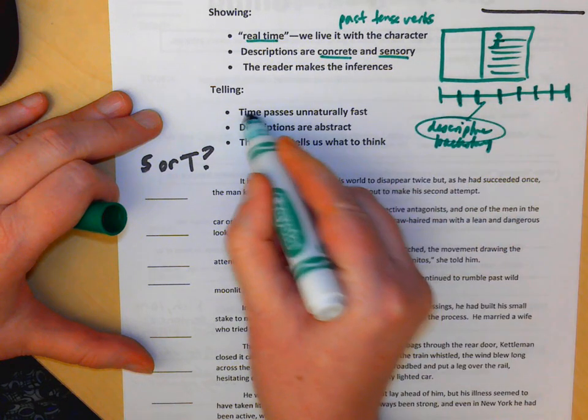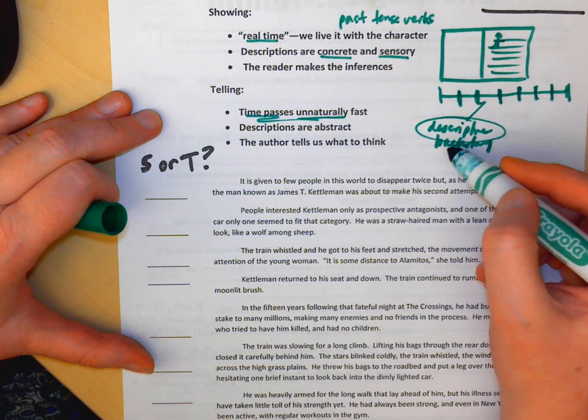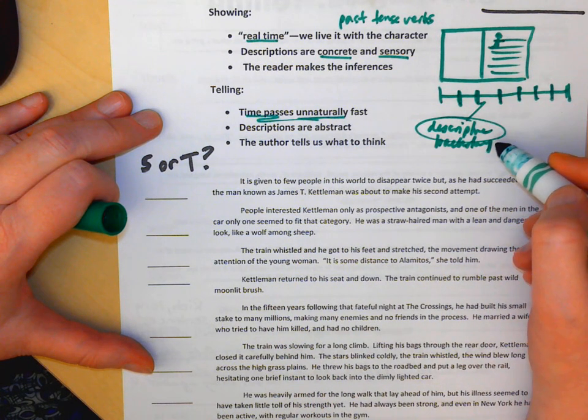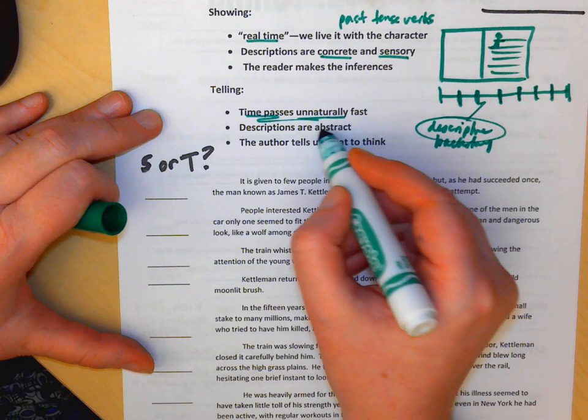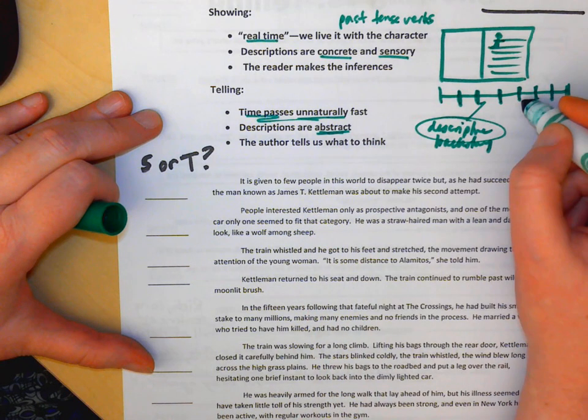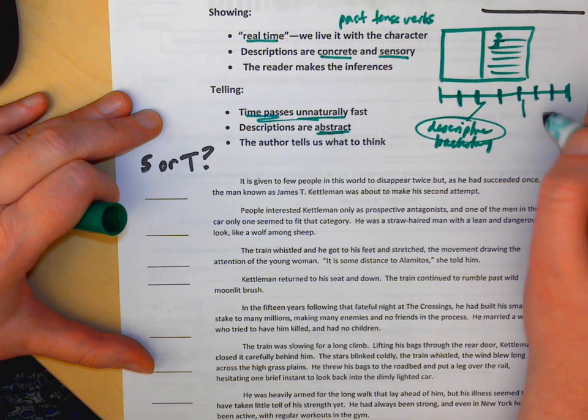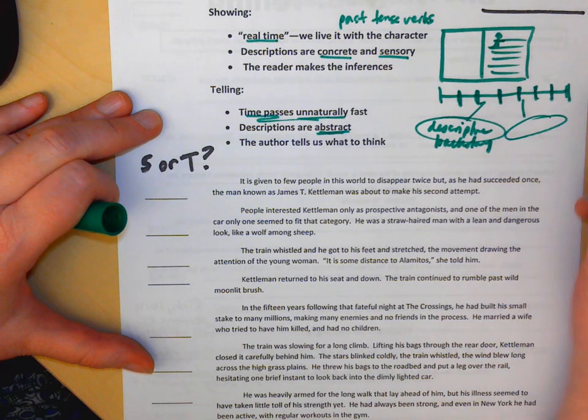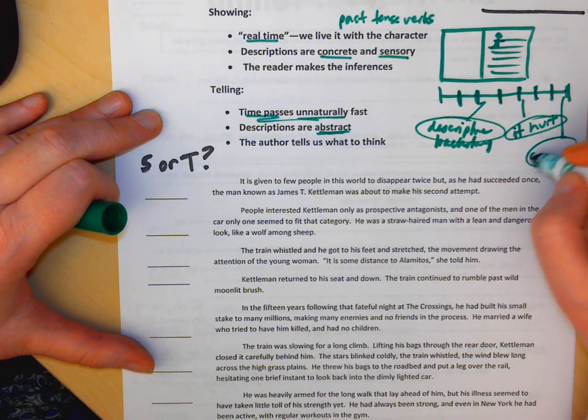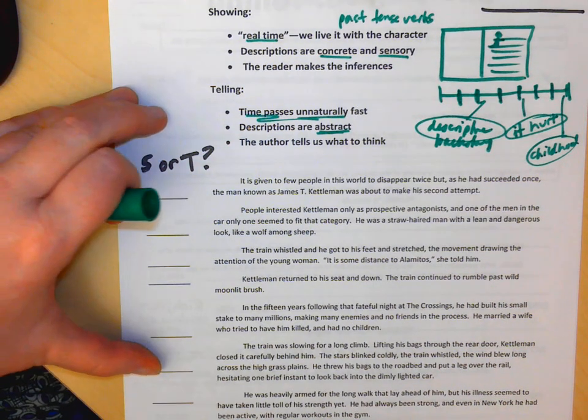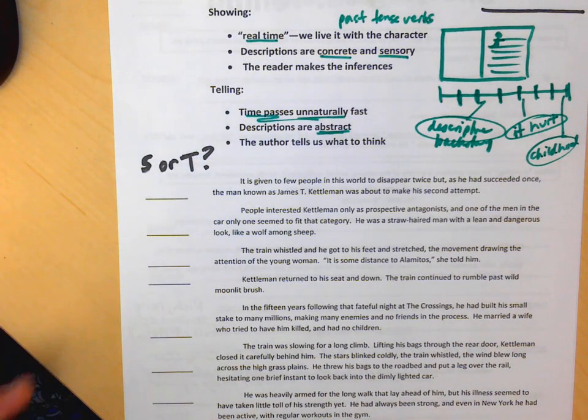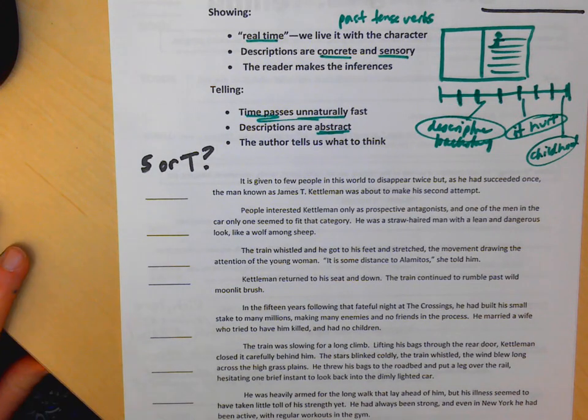Time can pass unnaturally fast and jump all over the place. You know, back in his childhood, he has a fear of wrenches because descriptions are abstract. So after he hurts his thumb on the wrench, maybe the author comes in to say it hurts, it hurt him. We get told what to think. Maybe here we launch into a whole backstory about his childhood, and we learn that he had three parents and 14 siblings, and some of them had three arms.